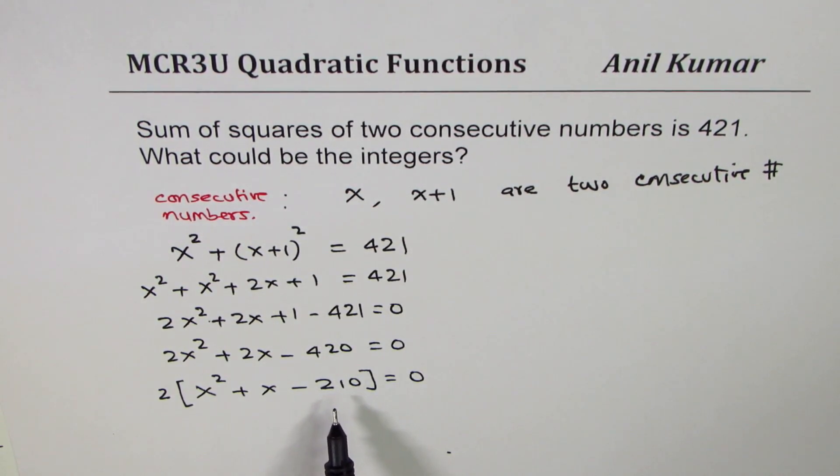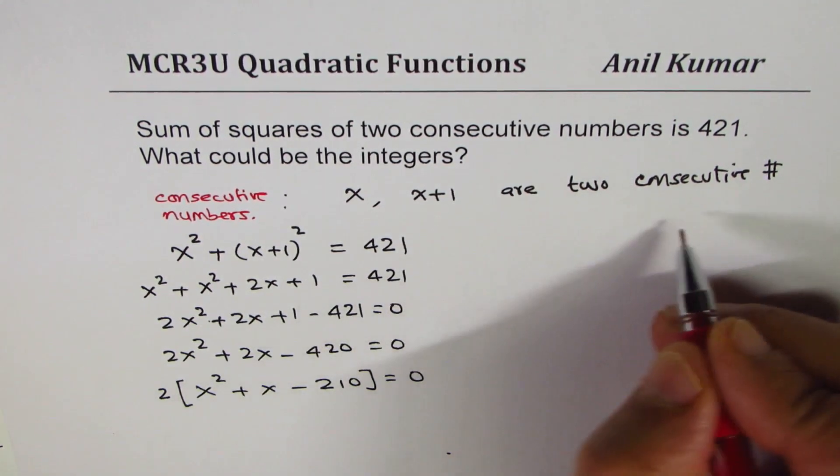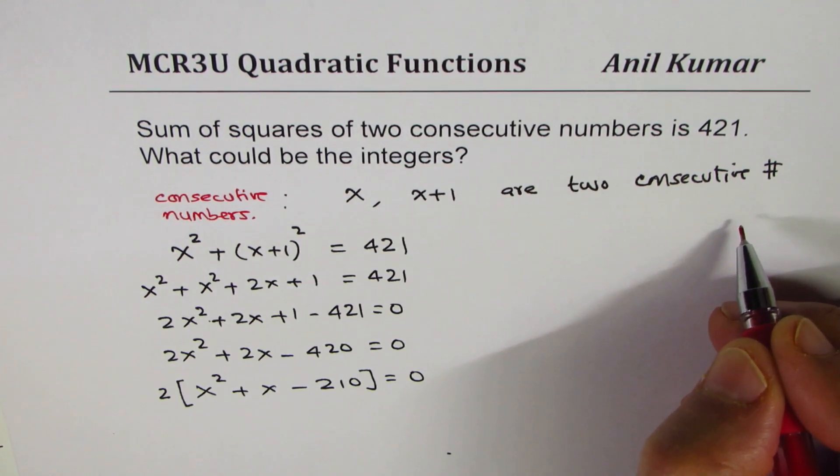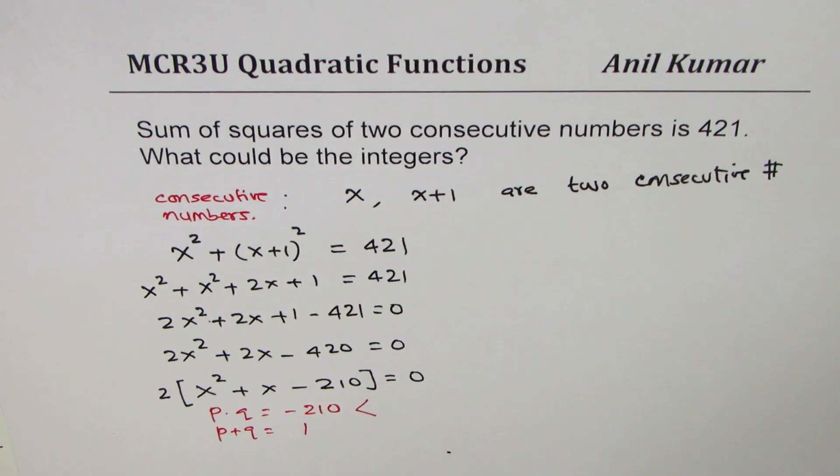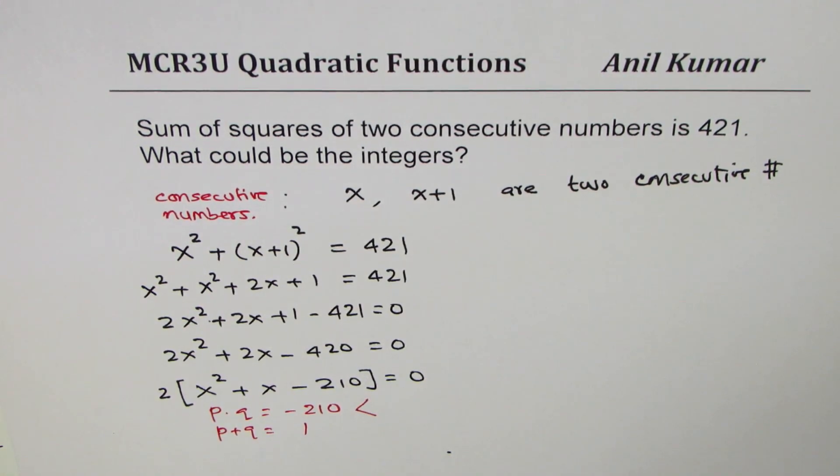We are looking for product of two numbers to be minus 210 and sum of these two numbers as one. What could be these two numbers? Clearly these two numbers are very close to one another, right? So the difference is only one.